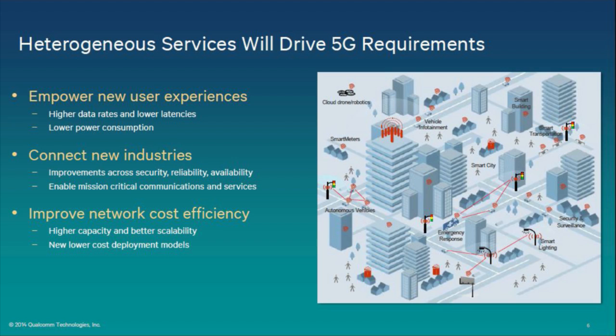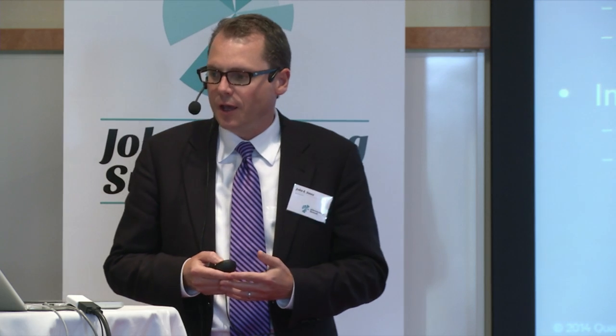Heterogeneous services are going to drive the 5G requirements. Empowering new user experiences means taking data rate to the next level, lowering latency, and lowering energy and power consumption. Connecting new industries requires improvements across security, reliability, and availability to enable new mission-critical applications. We also want to improve network cost efficiency — cost per bit is a fundamental metric that needs to be addressed holistically, so the 5G network must have a compelling cost structure to enable 2020 and beyond.